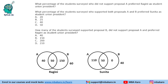The second question asks: what percentage of students surveyed who did not support Proposal A preferred Ragini as student union president? Those not supporting Proposal A include only-B and none — meaning B plus none. When we say 'did not support Proposal A', it does not mean just B; it means B plus none as well. We count those people — that is 210 people not supporting A who prefer Ragini.